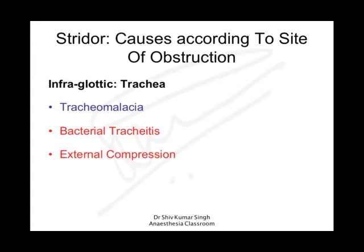In the infraglottic causes, that is within the trachea, congenital causes include tracheomalacia, and acquired causes are bacterial tracheitis or external compression.